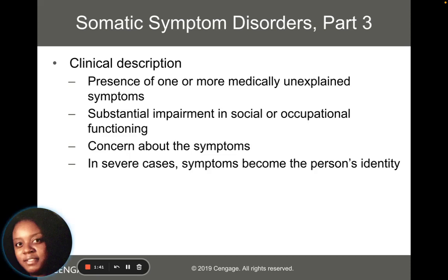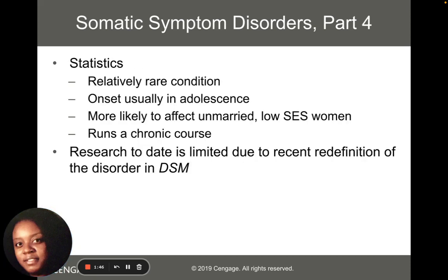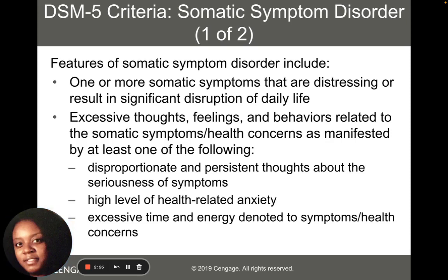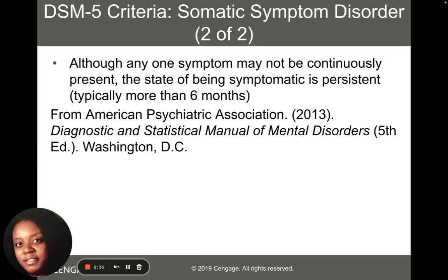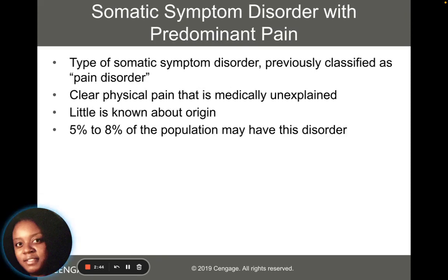There's also extreme concern about the symptoms, and those symptoms can become part of a person's identity. Statistically, somatic symptom disorders are relatively rare, but many occur in adolescence. They are most likely to affect those who are unmarried and women of low socioeconomic status. The course of the disorder is pretty chronic and lasts for a while, and research to date is limited due to the redefinition of the disorder in the DSM. The main thing to know from the DSM-5 criteria is that these are psychological symptoms presenting in physical ways for probably more than six months.